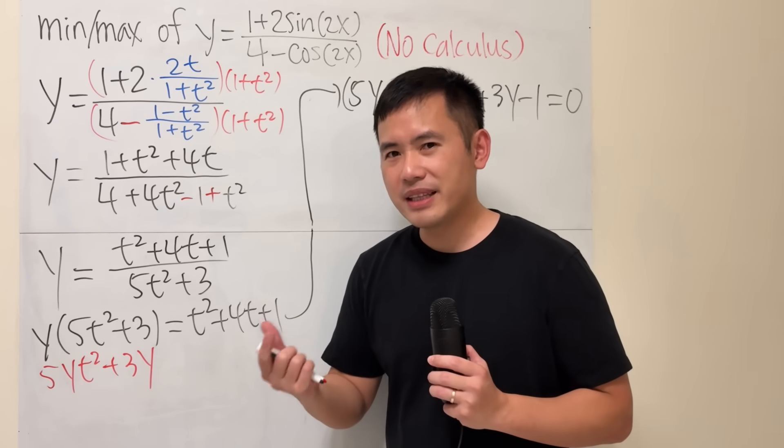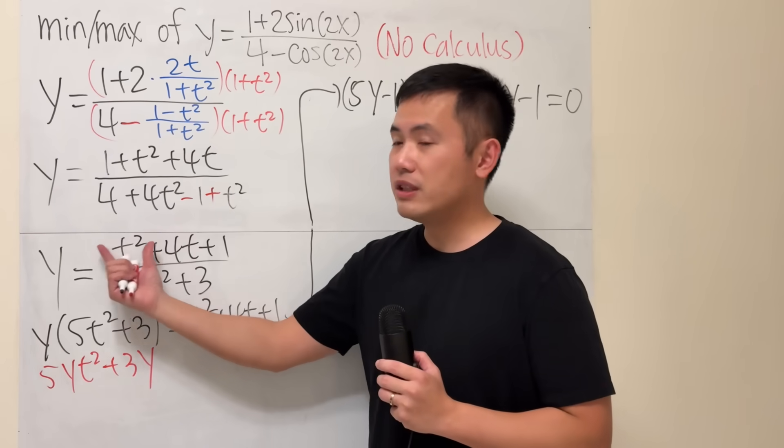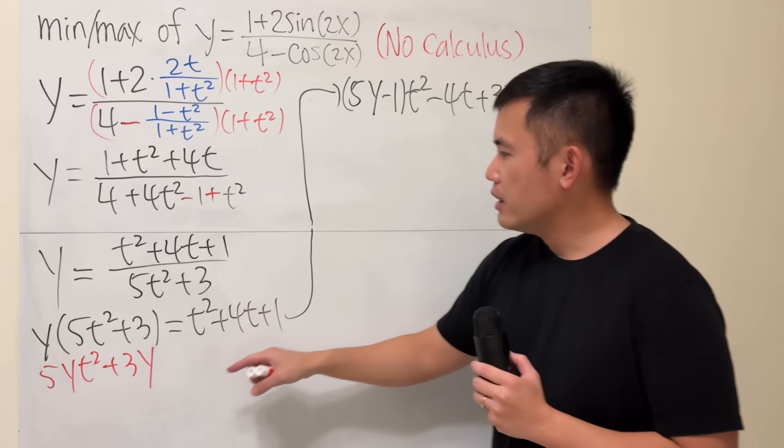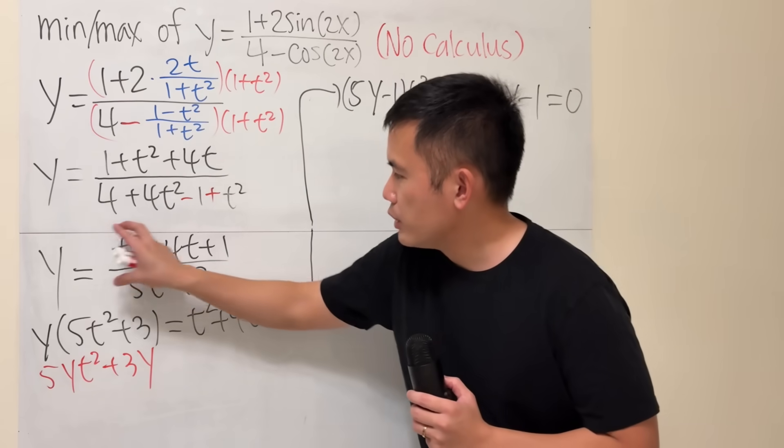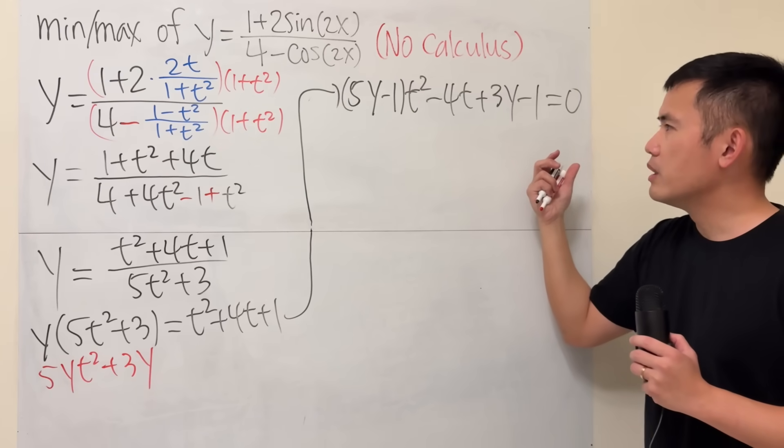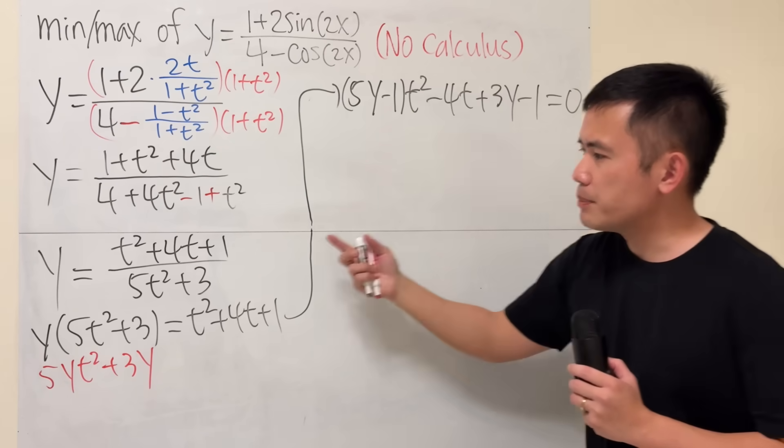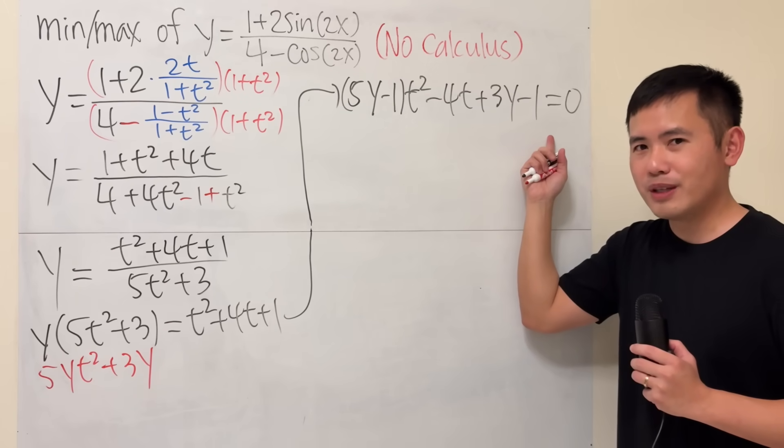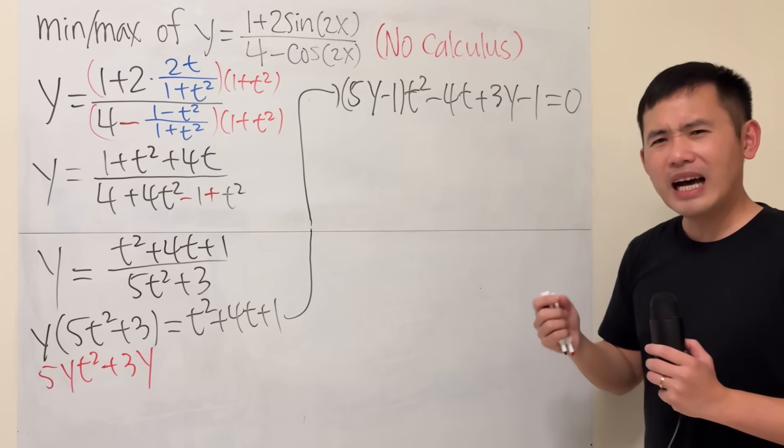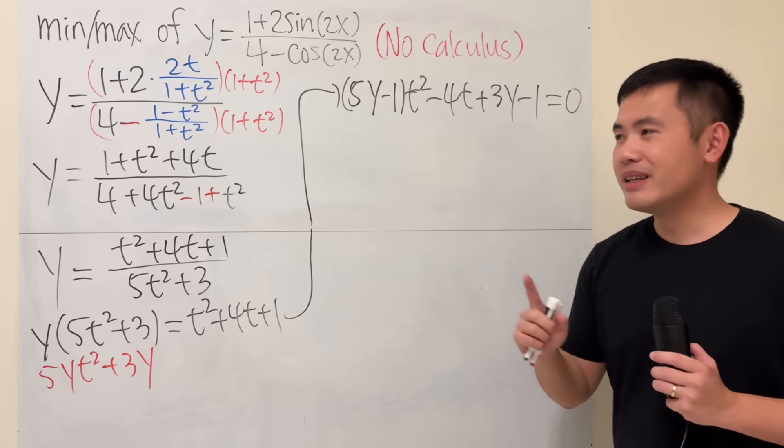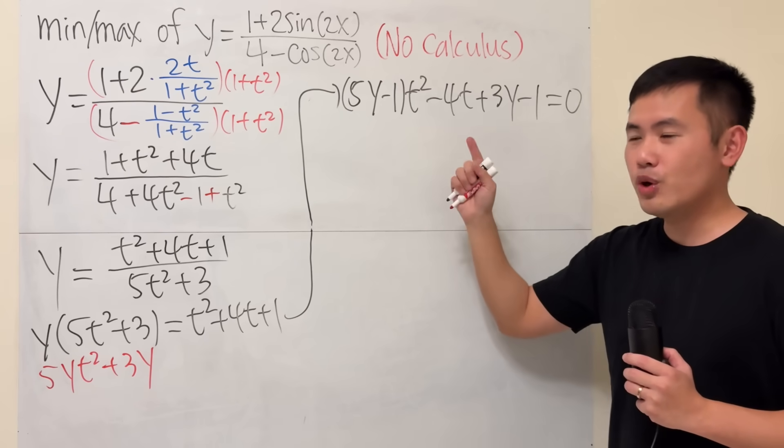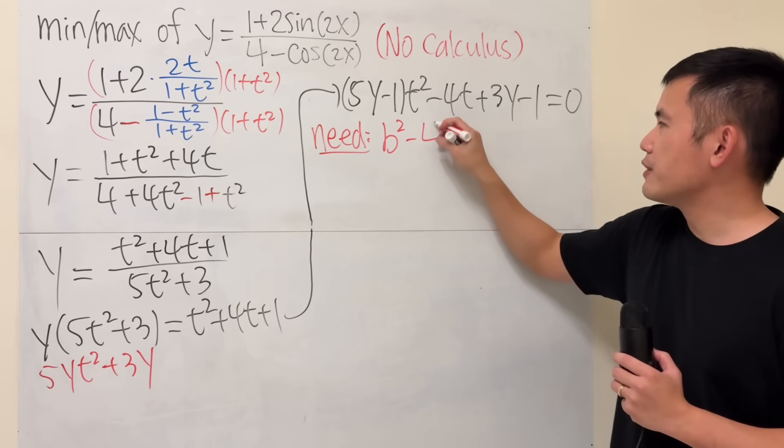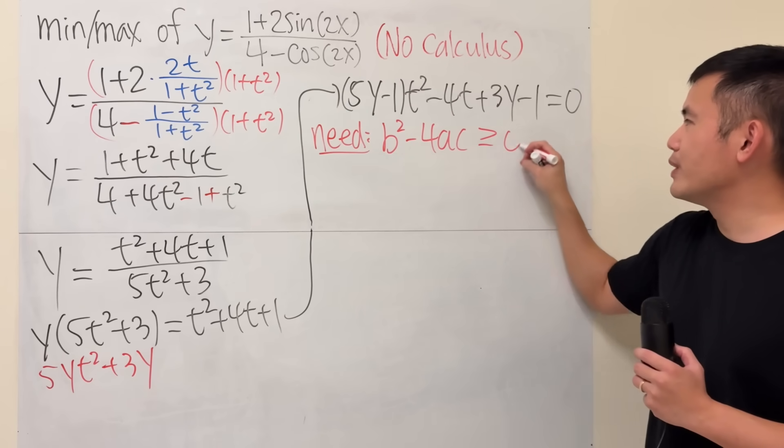the minimum and the maximum is kind of like telling you about the range of this function, meaning all the possible values for the y. And now we kind of transfer this equation into this right here. In order to get the possible values for y, we will have to make sure that this quadratic equation is solvable in terms of real numbers. And how can we make that happen? Well, we have to make sure that its discriminant. So, I would say we need b squared minus 4ac is greater than or equal to 0.